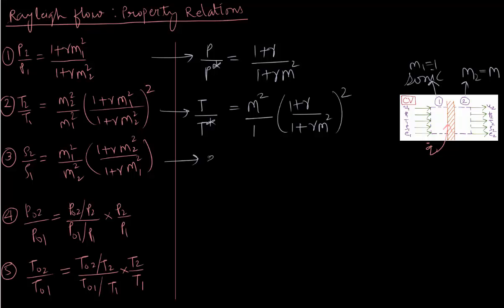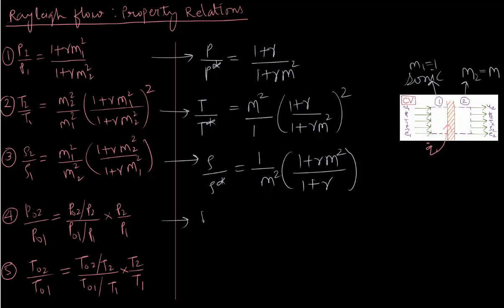Similarly, ρ/ρ* = (1/M²) × (1 + γM²)/(1 + γ). We can also find P0/P0* and T0/T0* by substituting the same reference condition M1 = 1. These reference sonic conditions P*, T*, ρ* are constant values throughout the flow.